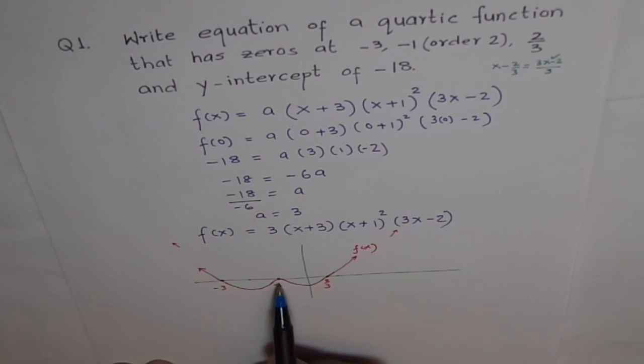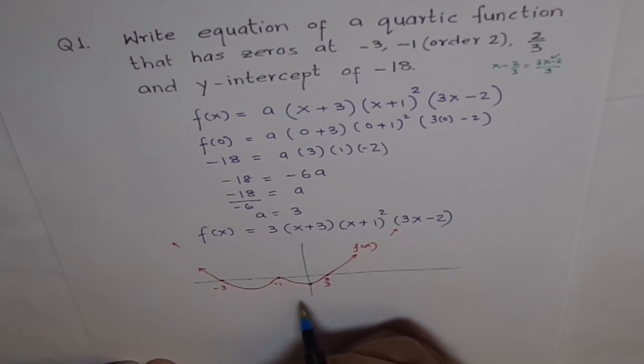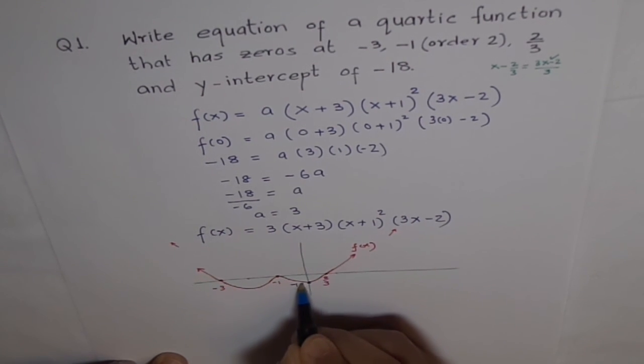Zeros at minus 3, minus 1 of order 2, and at 2 over 3. Correct? And this value is what? Y-intercept and this should be minus 18.